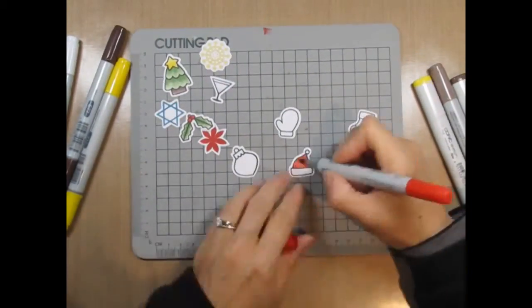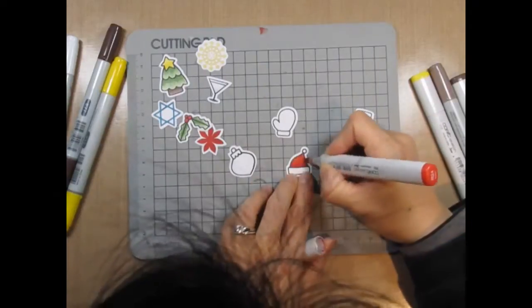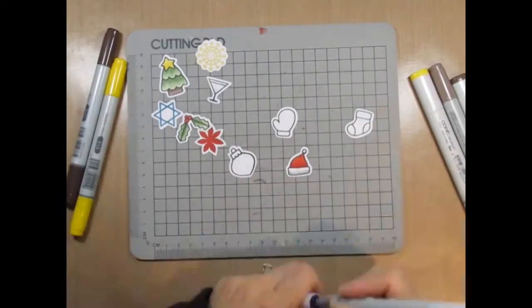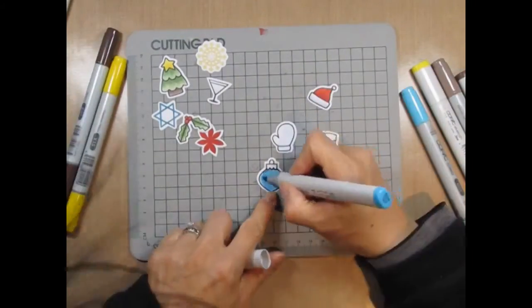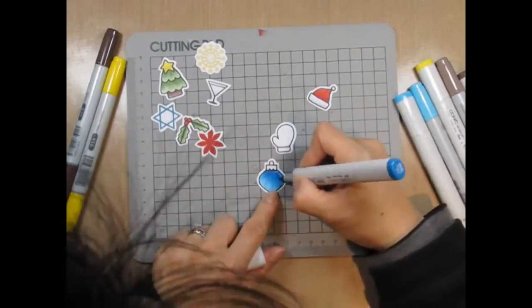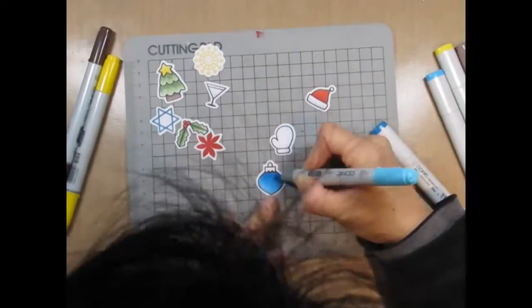For colouring and shading, I typically use three shades of the same colour. I always start with the lightest, shade a little bit with the medium, and then more with the dark, and then go back over it with the lightest colour.